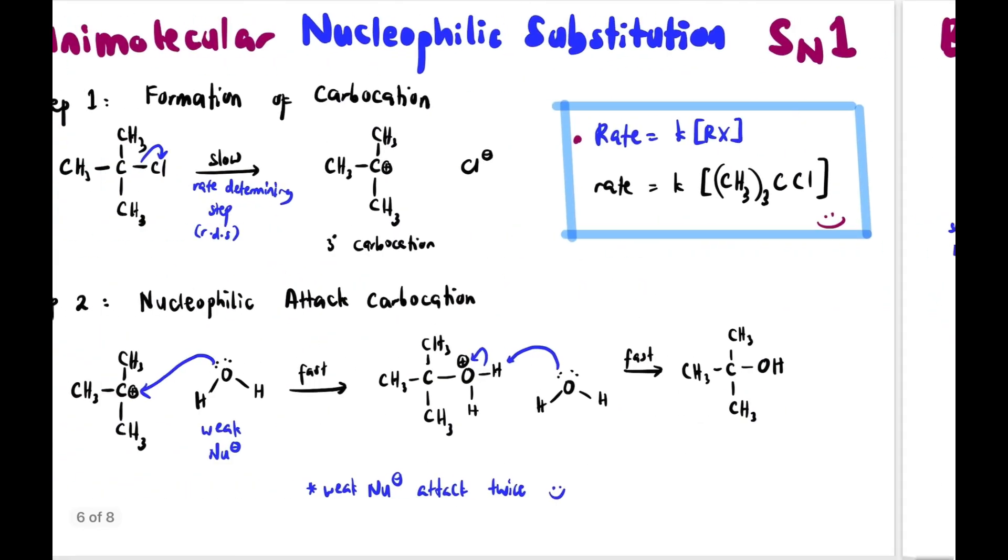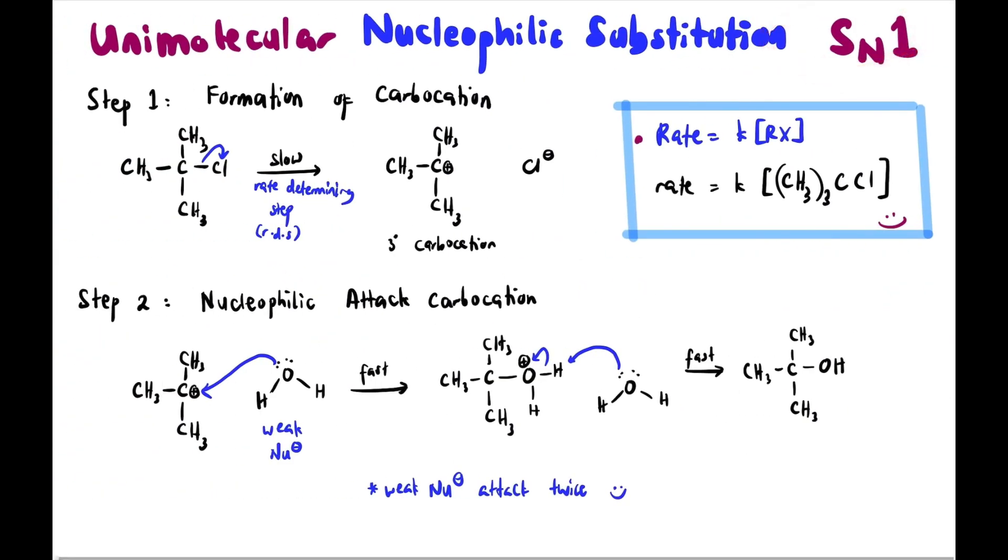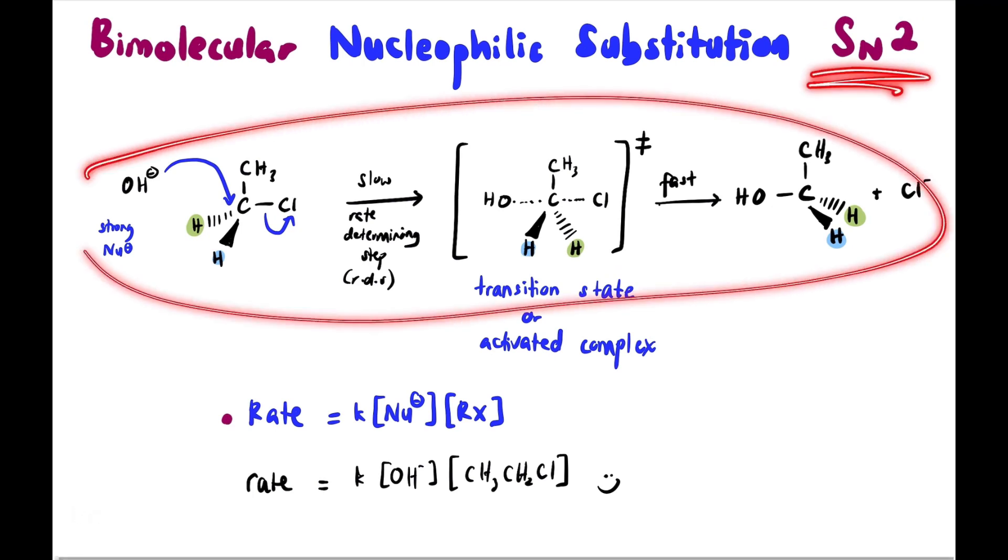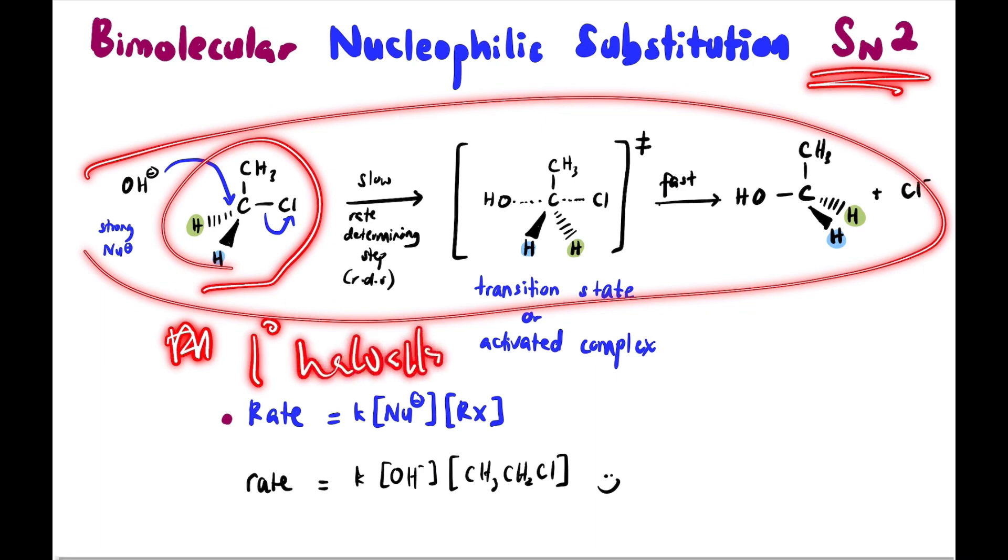Look back at the earlier example. SN1 needs to be done step by step. Need to remove first before it can attack. That's SN1. SN2 can do it in one go. Attack and directly leave. Just need to show the transition state in between. That's why in this example we gave primary haloalkane.